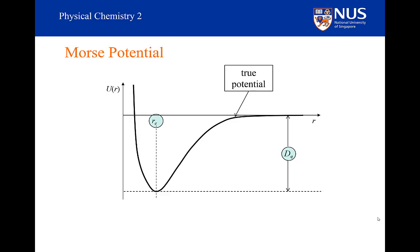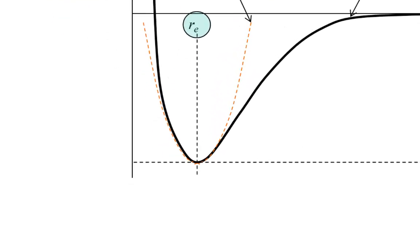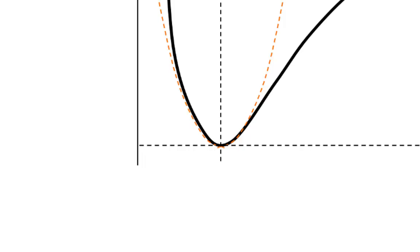We never really measure D sub E. We always measure the dissociation energy from the V equals zero level, and then we have to do a little bit of maths to determine what D sub E might be. The harmonic potential describes the true potential quite nicely at the bottom of the well, which is one reason why it works well in low vibrational states when the quantum number V is small. As we saw mathematically in part three, as long as the displacements are small, the harmonic oscillator will work.